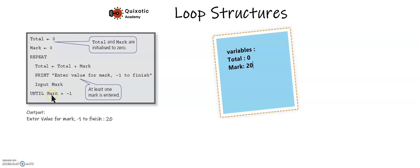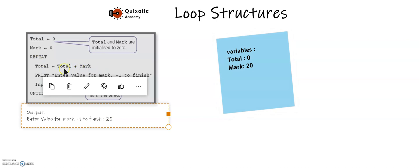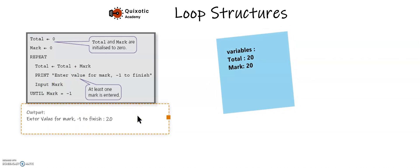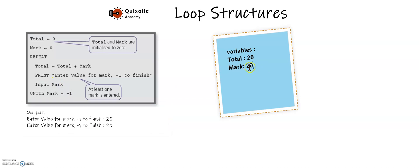It then checks the condition: if mark is minus one, it will stop. But mark is not minus one — it's 20 — so it will not stop and moves again to the first step where it calculates the total. Now total equals total plus marks: zero plus 20 equals 20. It will again ask me to enter a value and suppose I give it 20 again. Mark is updated to 20, and it checks if mark equals minus one. Since it's not, it repeats the process. Now total becomes 20 plus 20, which equals 40.